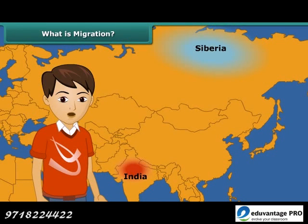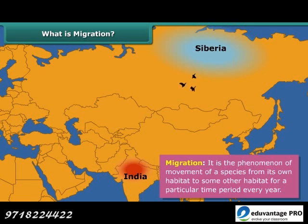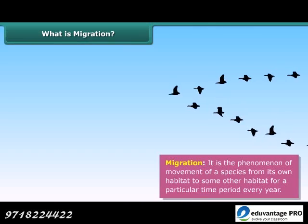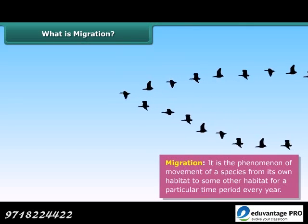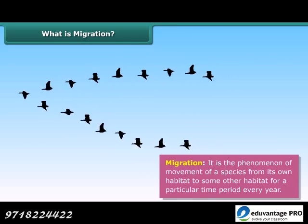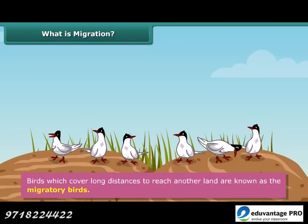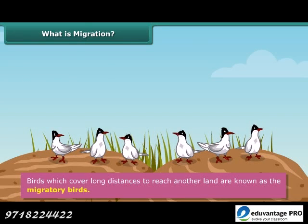Let us learn what the term migration means. Migration is the phenomenon of movement of a species from its own habitat to some other habitat for a particular time period every year, for a specific purpose like breeding or avoiding climatic conditions.